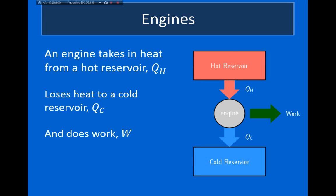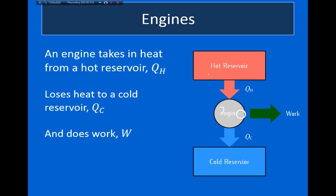Before I start talking about engines, I first need to introduce some terminology. When we talk about an engine, we say that the engine gets heat from something called a hot reservoir, and we denote the heat given to the engine as Q sub H. When the engine is running, it will lose some heat to its surroundings, which we call a cold reservoir, and we denote that heat lost as Q sub C. Lastly, the engine will do some work, which we denote as W.